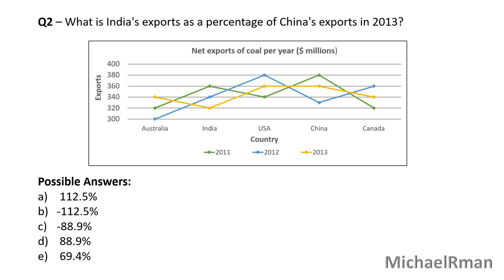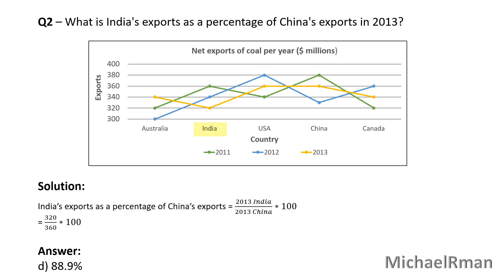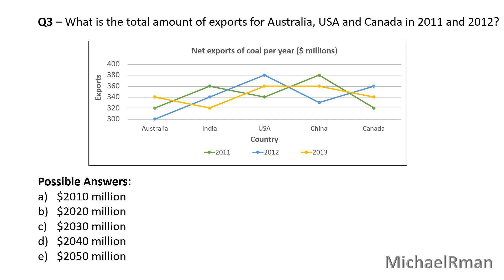The second question: What is India's exports as a percentage of China's exports in 2013? Please use the graph provided. The solution to question 2: India's exports in 2013 are $320 million and China's exports in 2013 are $360 million. If the question asks A as a percentage of B, then A forms the numerator and B the denominator. India's exports as a percentage of China's exports equals 320 divided by 360 multiplied by 100. The answer is D – 88.9%.